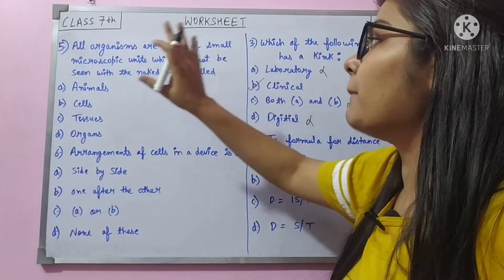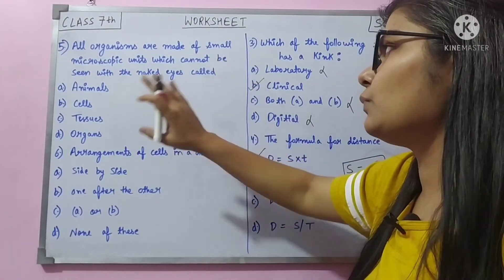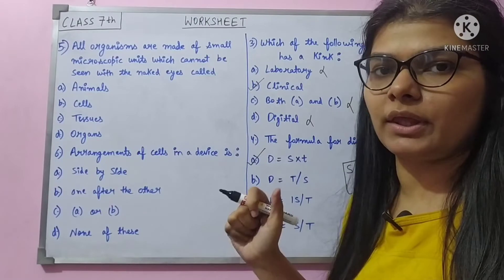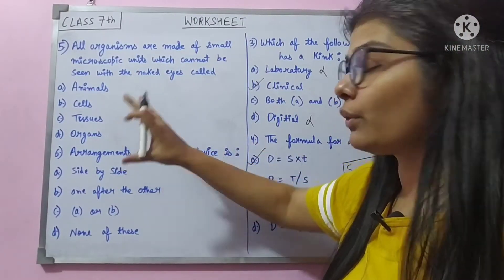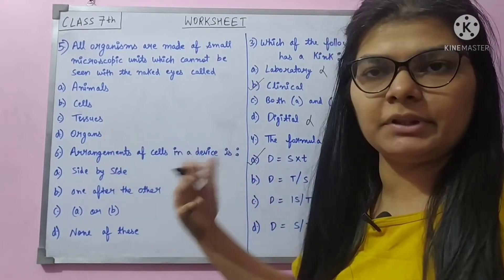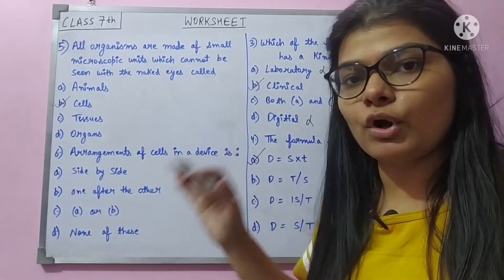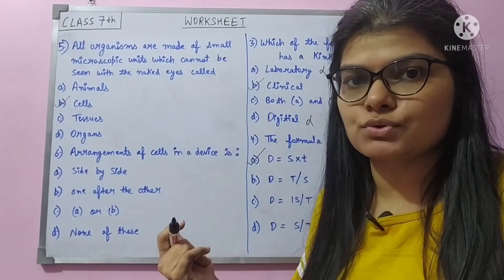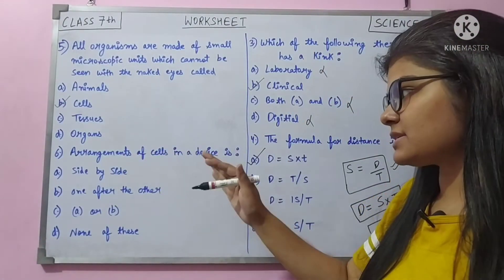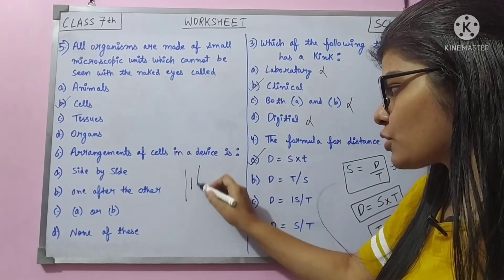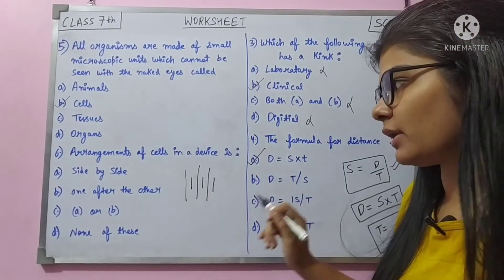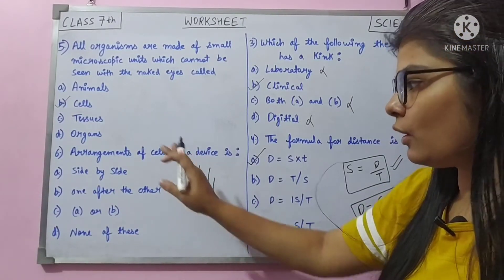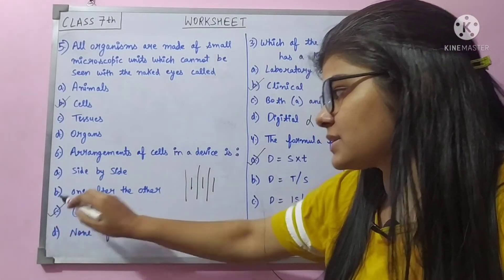Question 5: all organisms are made of small microscopic units which cannot be seen with the naked eye. Tissues are groups of cells — visible. Organs are visible. Cells are single units — cell is the basic unit of life. Amoeba is single-celled and not visible without a microscope. Cells can be arranged side by side or one after the other. Both arrangements are correct, so the answer is C — both A and B.